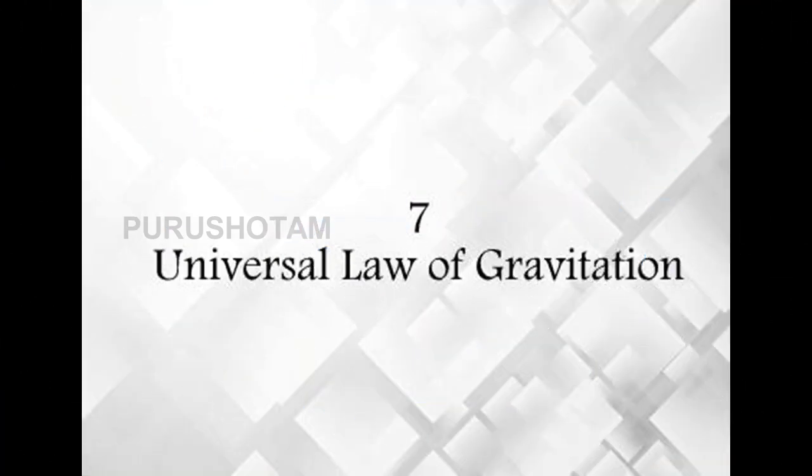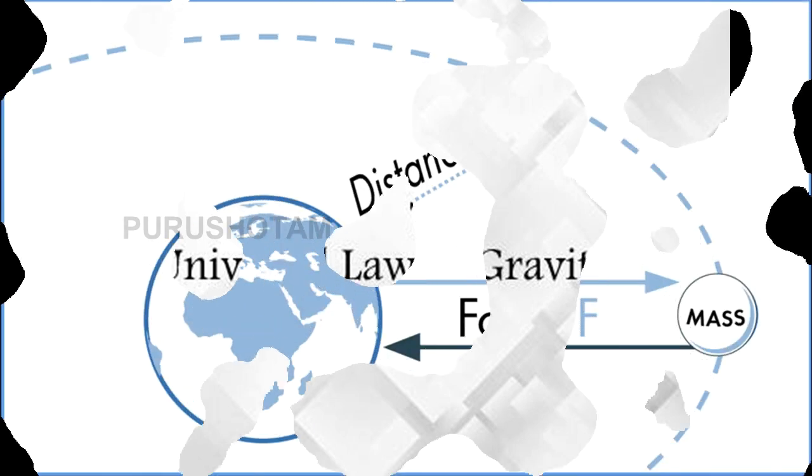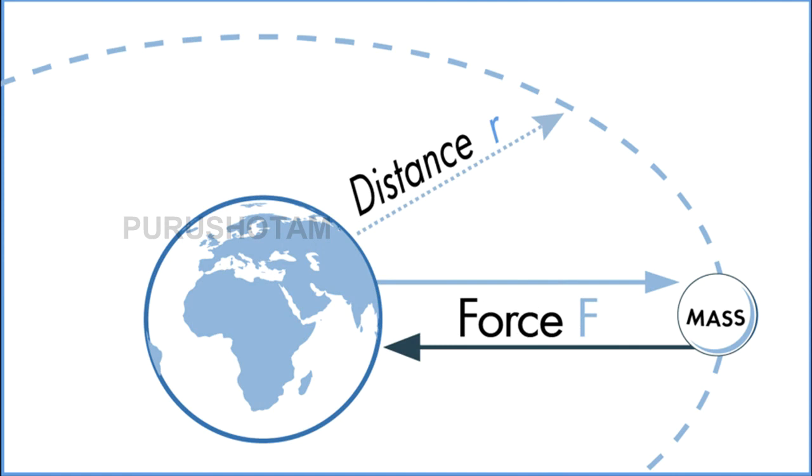Number 7: Universal Law of Gravitation. We may take it for granted now, but more than 300 years ago, Sir Isaac Newton proposed a revolutionary idea that any two objects, no matter the mass, exert gravitational force towards one another. This law is represented by an equation that many high schoolers encounter in physics class. It goes as follows: F equals G times M1M2 divided by R-squared.